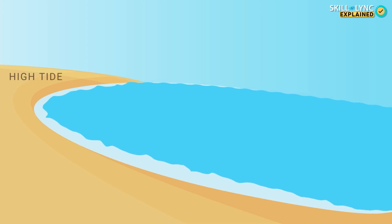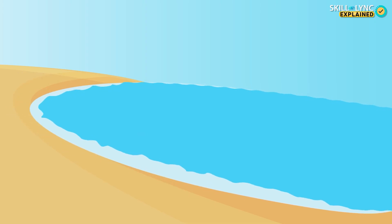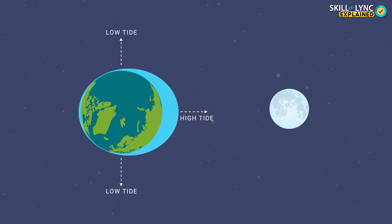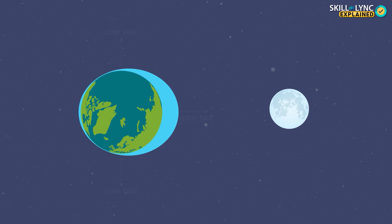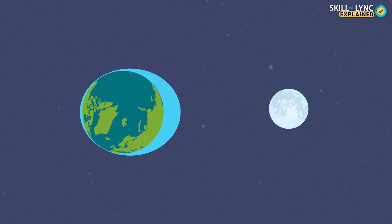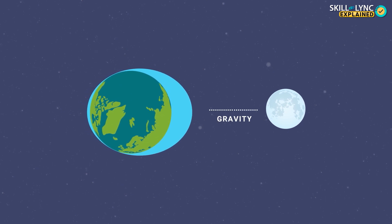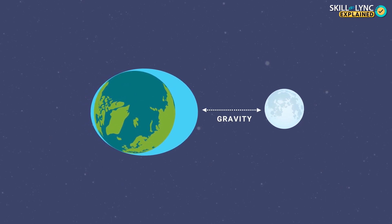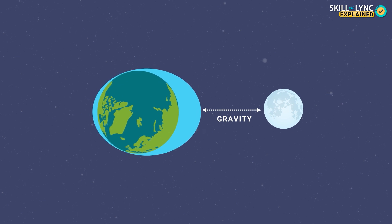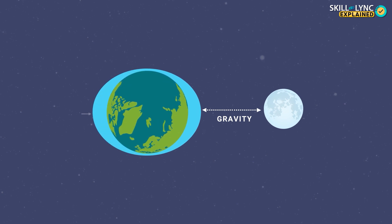But we experience two high tides and two low tides per day, so we still have to account for one more high tide. This occurs on the opposite side of the first high tide. The moon's gravity also pulls the earth towards it, and the sea on the far side is also pulled towards the moon, causing an increase in sea level, but not as much as on the side facing the moon itself.